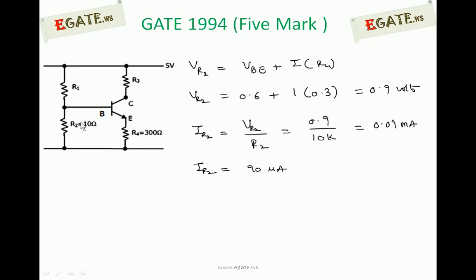IR2 is equal to VR2 divided by R2. VR2 is nothing but voltage across base, that is 0.9 divided by 10kΩ. So it is 0.09 mA. And IR2 can be written as 0.09, that is nothing but 90 microamps.